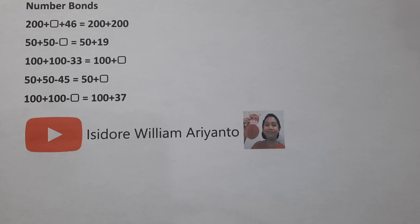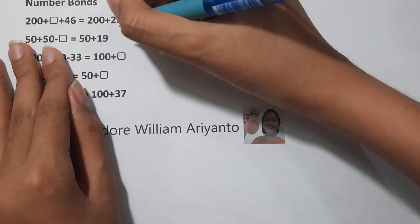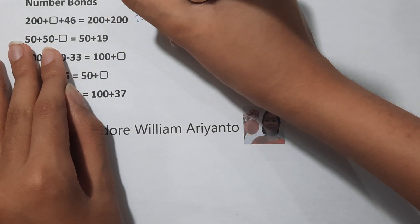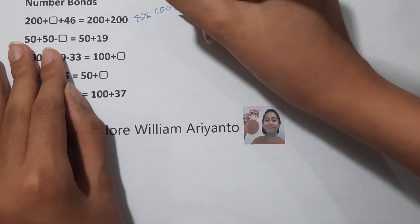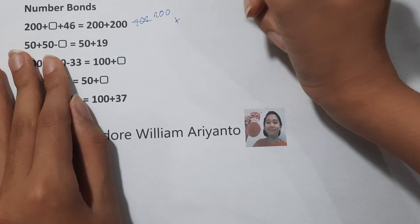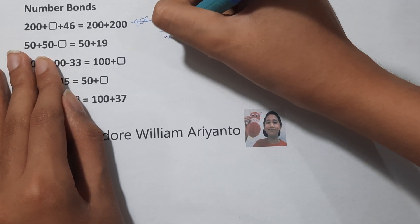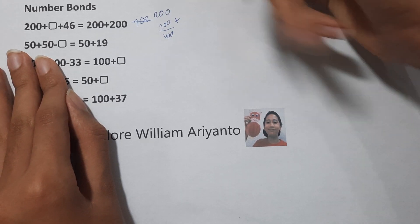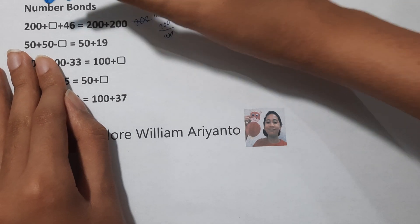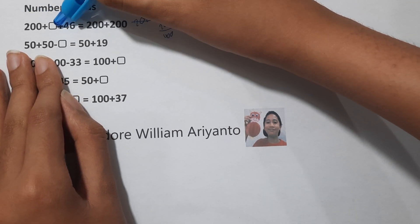Hello friends, today we are going to talk about number bonds. What they essentially mean is basically just 200 plus 200 equals to 400. Now what number can be filled to make this equal to this?